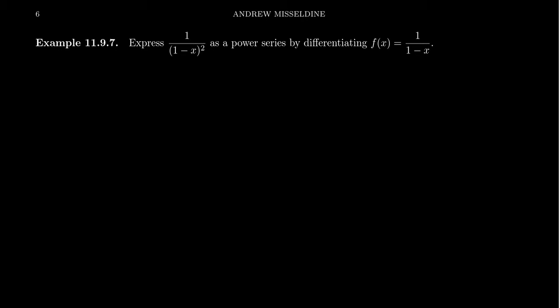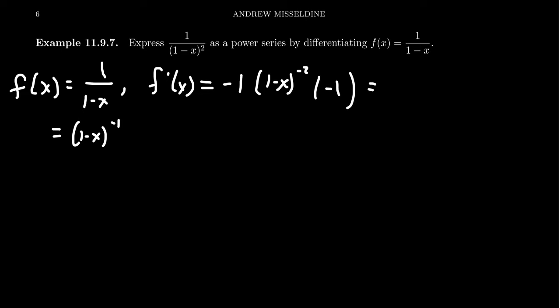It turns out you can connect this rational function with this rational function by taking derivatives. Notice if f(x) is 1 over 1 minus x, then its derivative, by the usual rules, I can use a chain rule. If I think of this as 1 minus x to the negative 1 power, then by the chain rule, this derivative will look like negative 1 times 1 minus x to the negative 2 times the inner derivative, which is negative 1. So we get 1 over (1 minus x) squared. This builds the connection: if we take this function to be f(x), this function is f prime of x. Why is that significant?